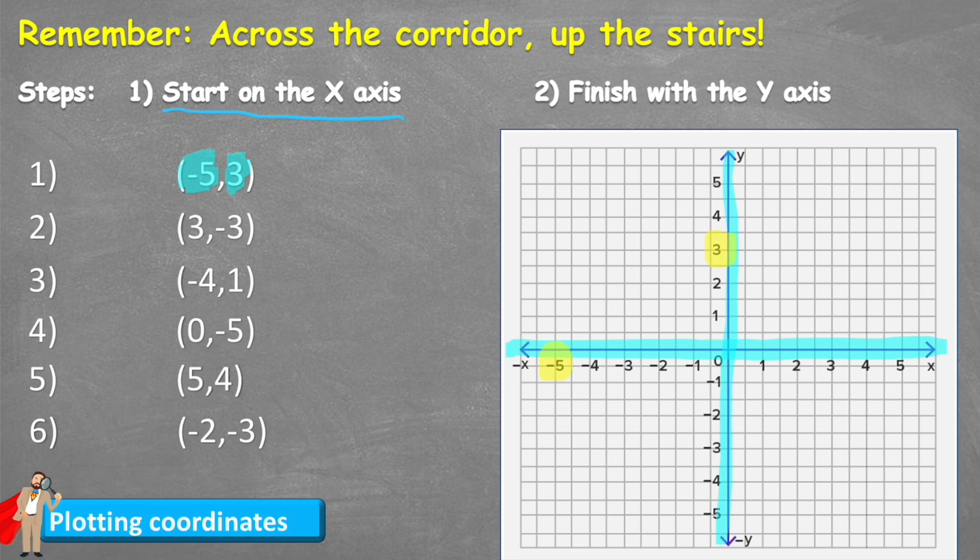So what I would do is draw a line from my 3 and from my negative 5 and find where they cross. I was a bit sloppy there, I should have been right on that line, but you can see X marks the spot.